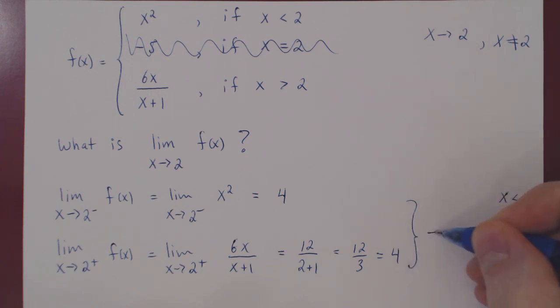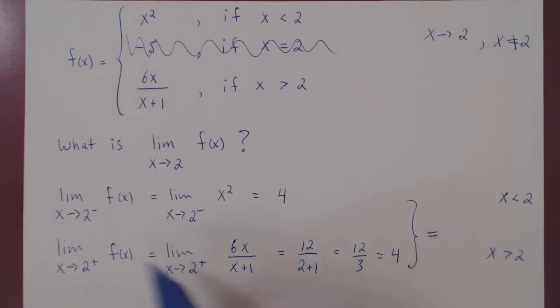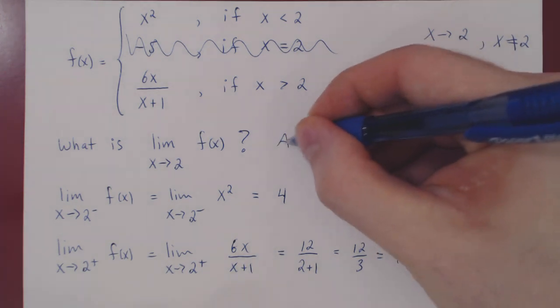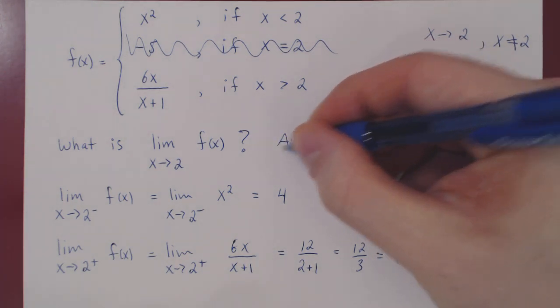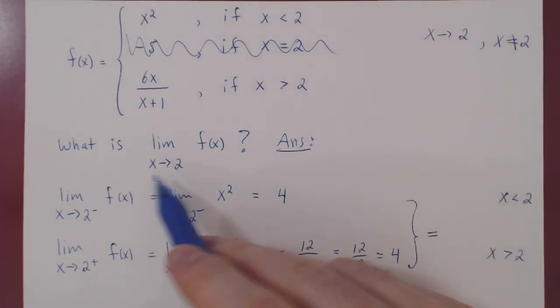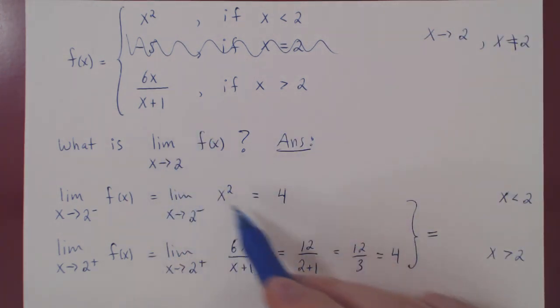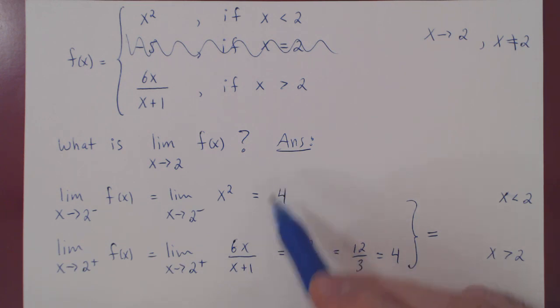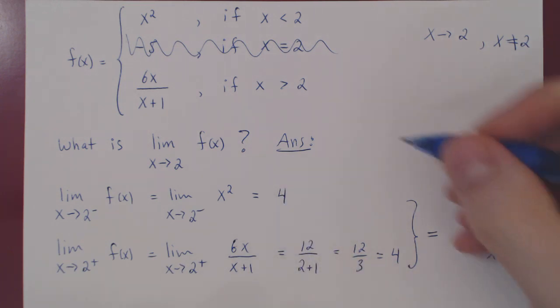Since both the limit from the left and the limit from the right exist and are equal, our final answer is that the two-sided limit also exists and is equal to 4.